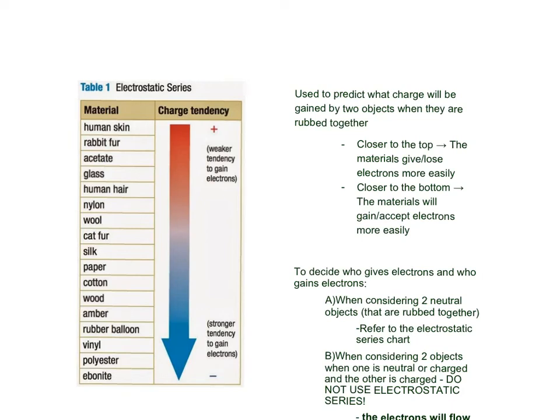Hello everyone. Last time we talked, there were a lot of questions about how we figure out whether an object is positively charged or negatively charged. The answer to that is by using the electrostatic series. The electrostatic series is basically a list of materials that tells us what charge it would be if it was rubbed against another object.